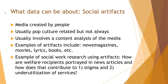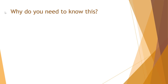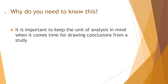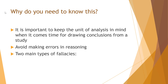Those are the different units of analysis. You may be asking why you need to know this. For research purposes, it's important to keep in mind the unit of analysis when drawing conclusions from the results of a study, because we want to avoid errors in reasoning. The two main types of fallacies are called the ecological and reductionist fallacies.